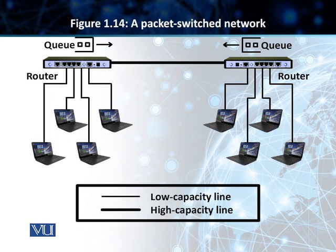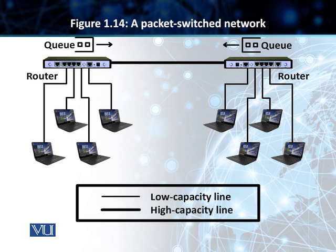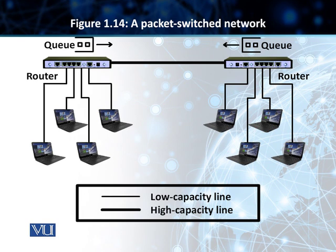The second type of switched networks are called packet switched networks. The most common type of switching — in fact, the only type of switching you will find in data communication systems today — is packet switching. The data is sent from point A to point B using packets. As you can see, the two sides are connected using routers. Once again, you have a high-capacity line connecting the two routers, and a low-capacity line connecting the machines or laptops on the sending and receiving end to the router. In a packet switch, there is a queue that exists to hold packets until they are transmitted and the line is available between the two routers.